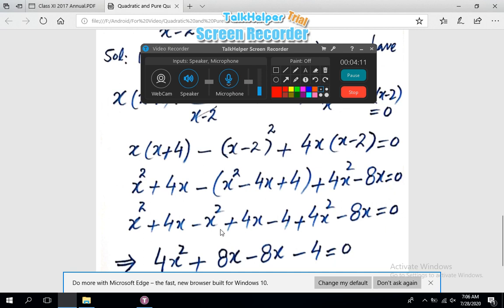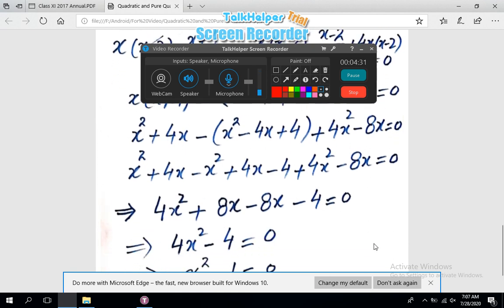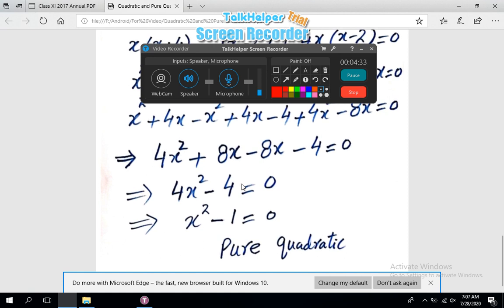Simplification gives -x² + x² will cancel, and you will be having 4x² over here, then +4x + 4x gives us 8x, and this -8x remain same, this -4 remains same.